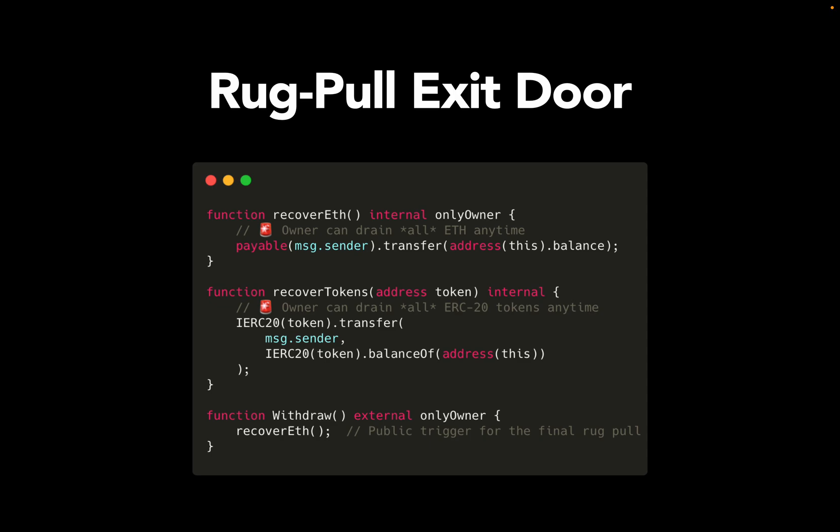Last but not least, you have the rug pull exit door. That simply lets the owner take all ETH from the contract at any time. The scammer can clean out the contract in one click, and you have zero protection — it's the classic rug pull button.